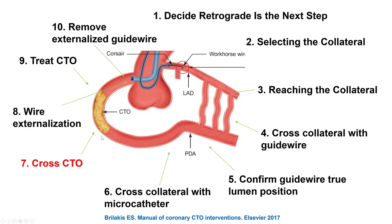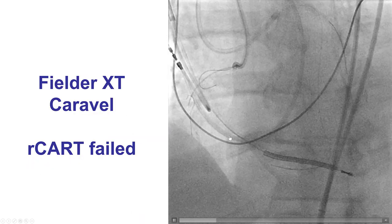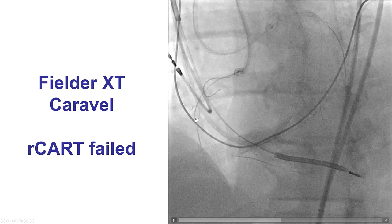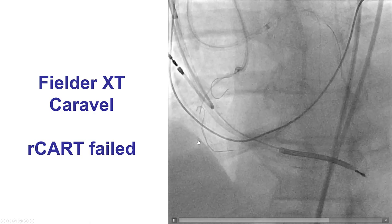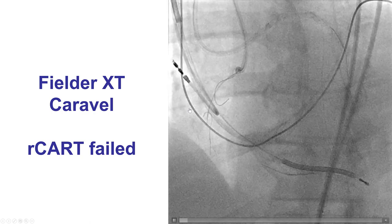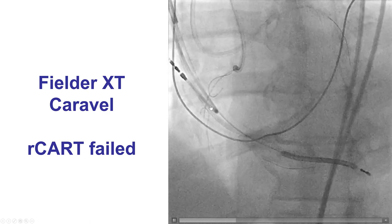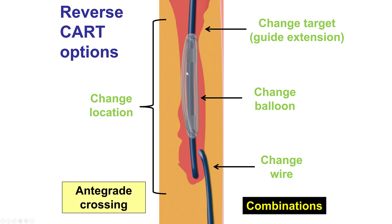The next step — crossing the chronic total occlusion — was challenging. Even though we had an antegrade guide wire to the mid-right coronary artery and retrograde access, we were unable to complete the reverse CART by inflating a balloon over the antegrade guide wire. Solutions include changing the re-entry location more proximally or distally (called extended reverse CART), using a larger balloon sized by IVUS, using a guide extension, or changing the guide wire.